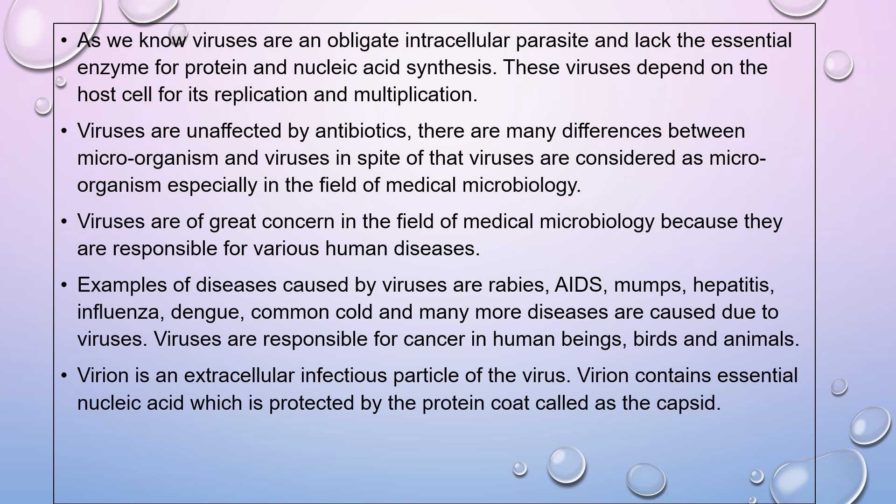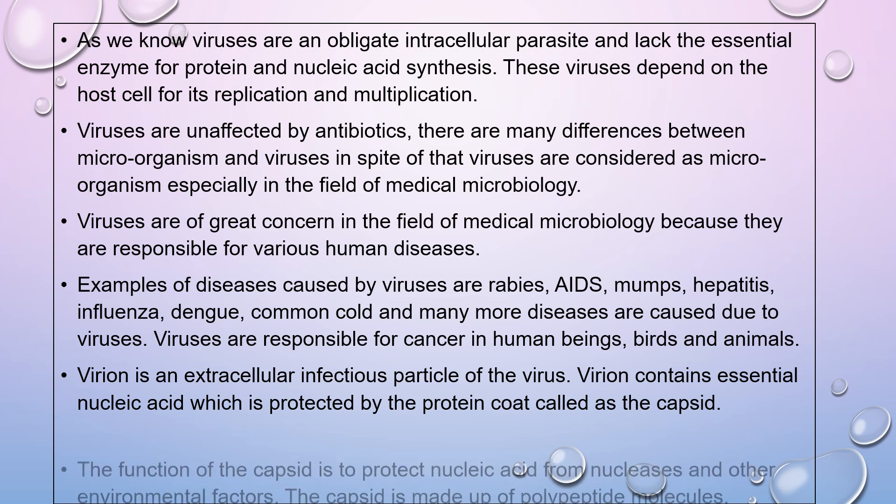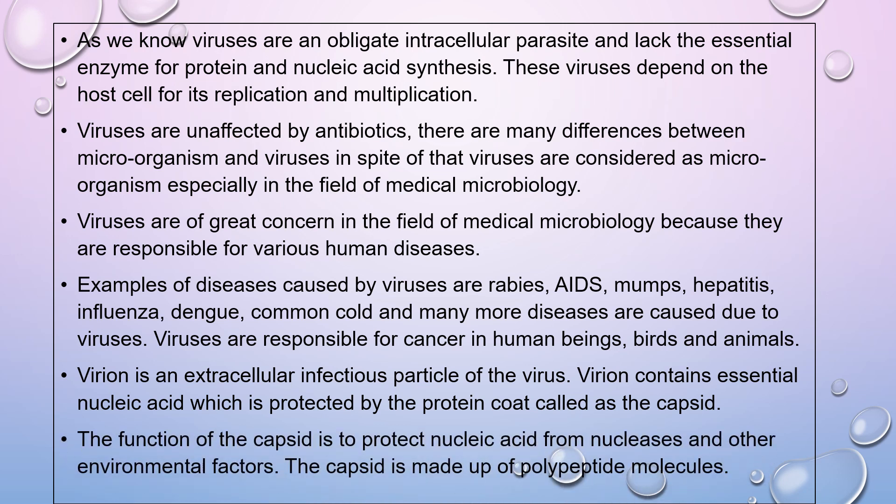Virion is an extracellular infectious particle of the virus. It consists of essential nucleic acid which is protected by a protein coat called a capsid. The function of the capsid is to protect the nucleic acid from nucleases and other environmental factors.